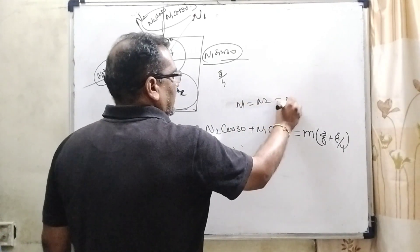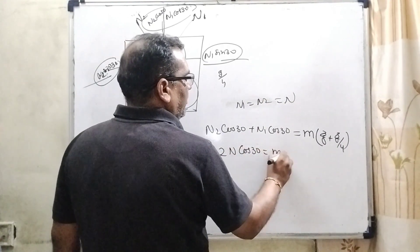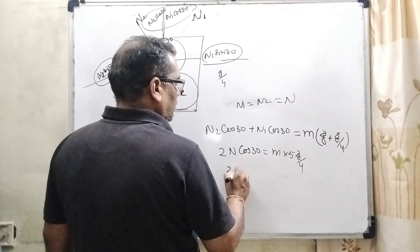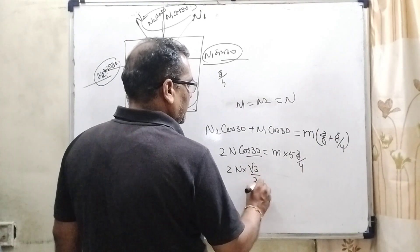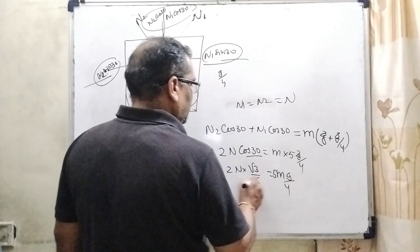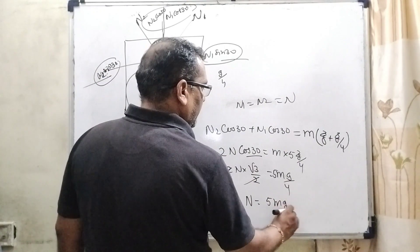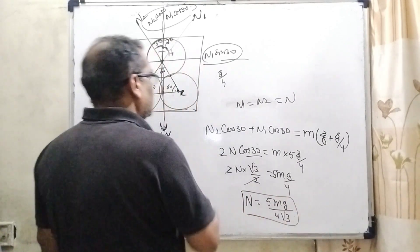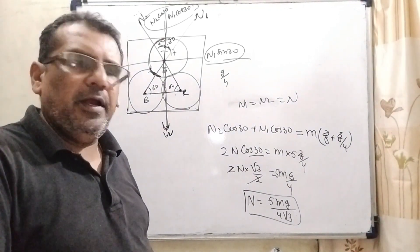Here N2 and N1, because they are identical, therefore N1 equals N2. So, here 2N cos 30 equals mass times 5g by 4, and 2N times cos 30, the value of cos 30 is root 3 by 2, equals 5 mg by 4. Two cancels out, then N equals 5 mg by 4 root 3.